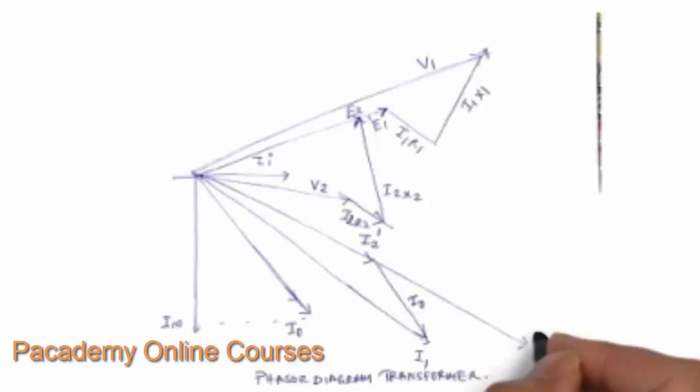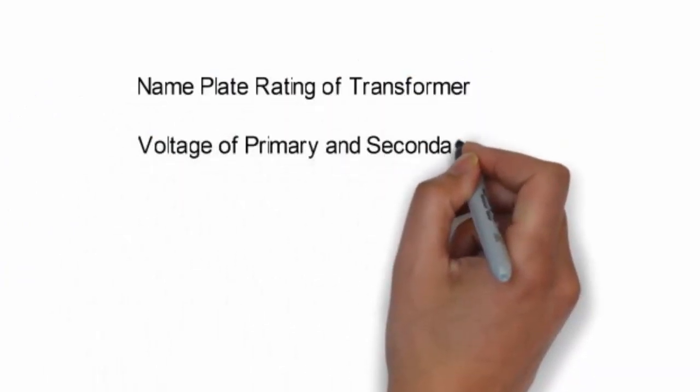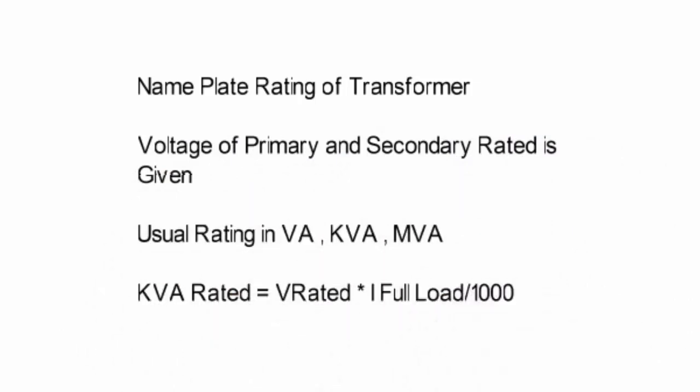Looking at the phasor diagram drawn from the equivalent circuit: V1 is the supply voltage, and the primary current lags behind the supply voltage. By subtracting the voltage drops due to resistance and reactance losses, you get E1 — the voltage induced in the primary — which is always less than the primary supply voltage V1. Similarly, V2 is obtained by subtracting the resistance and reactance losses from E2, so the terminal voltage V2 is always less than E2. These deductions can be made directly from the phasor diagram, which is derived from the equivalent circuit.